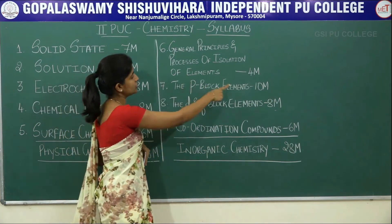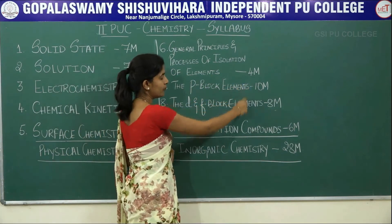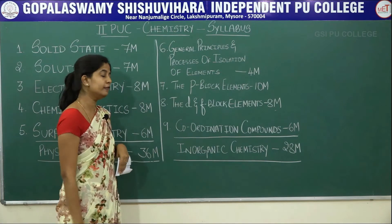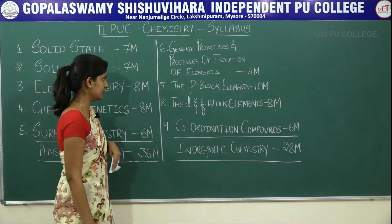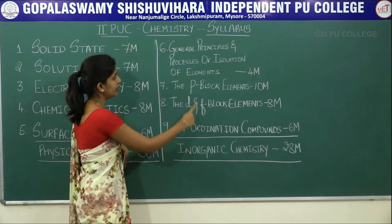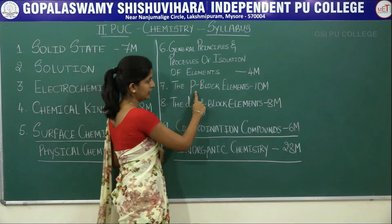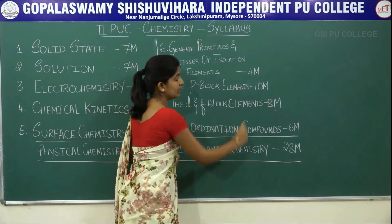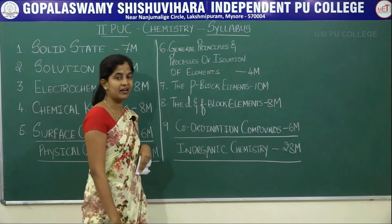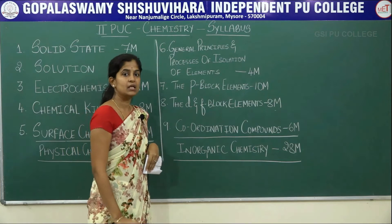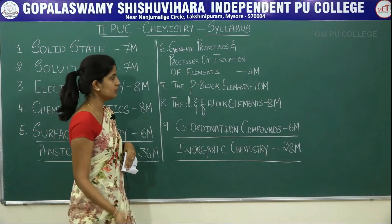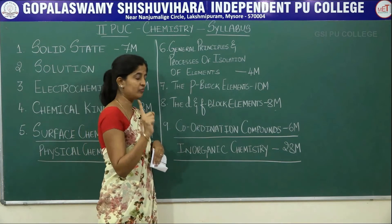The total weightage of metallurgy is 4 marks, divided into a 1-mark question and a 3-mark question. The second chapter of inorganic chemistry is p-block elements. Its total weightage is 10 marks, divided into one 1-mark question and three 3-mark questions — that is 9 plus 1, totaling 10 marks.